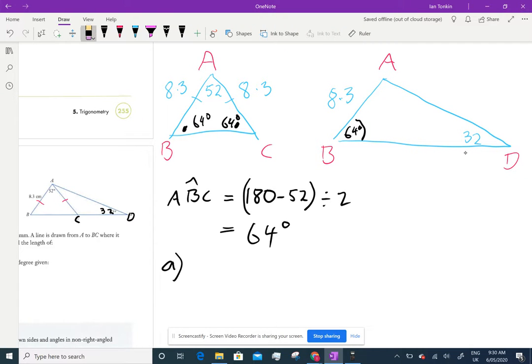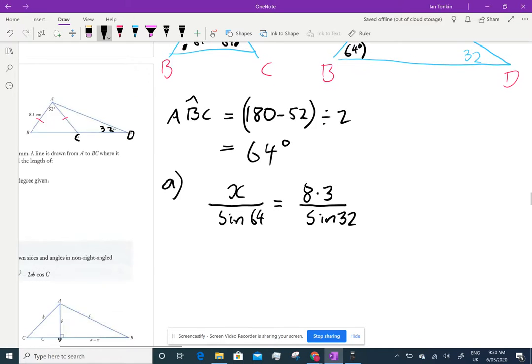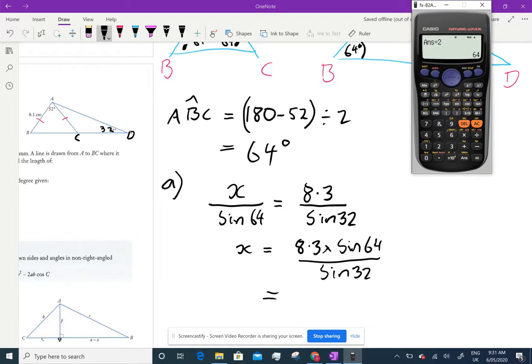So now I can use the sine rule to find AD. I'll use x to make it easier, so x over sine 64 equals 8.3 over sine 32. So x equals 8.3 times sine 64 over sine 32.